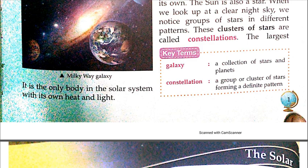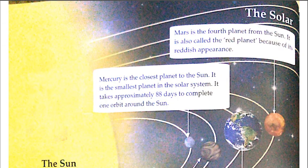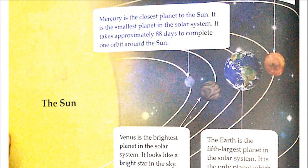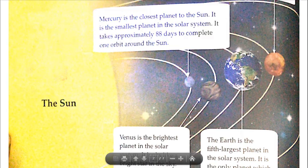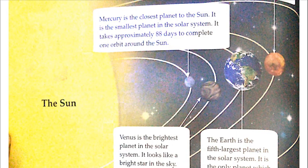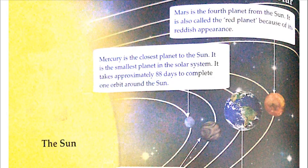The largest constellation in our galaxy is Hydra, a water snake, and there is also Orion. Now we move to our solar system — here is the sun at the center, and the planets are shown around it. All planets revolve around the sun in a fixed path called an orbit.